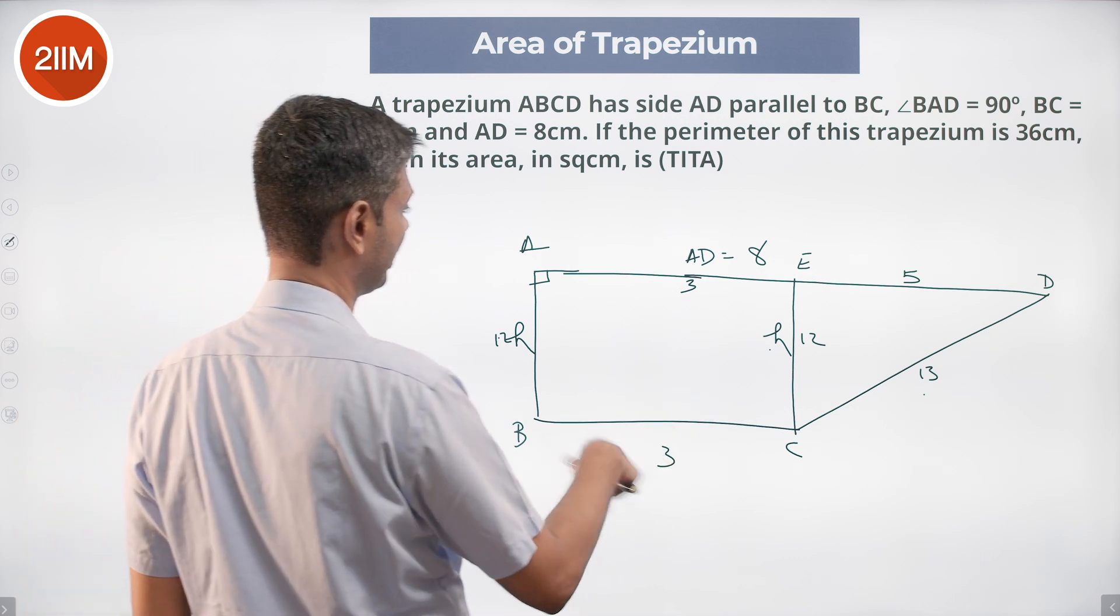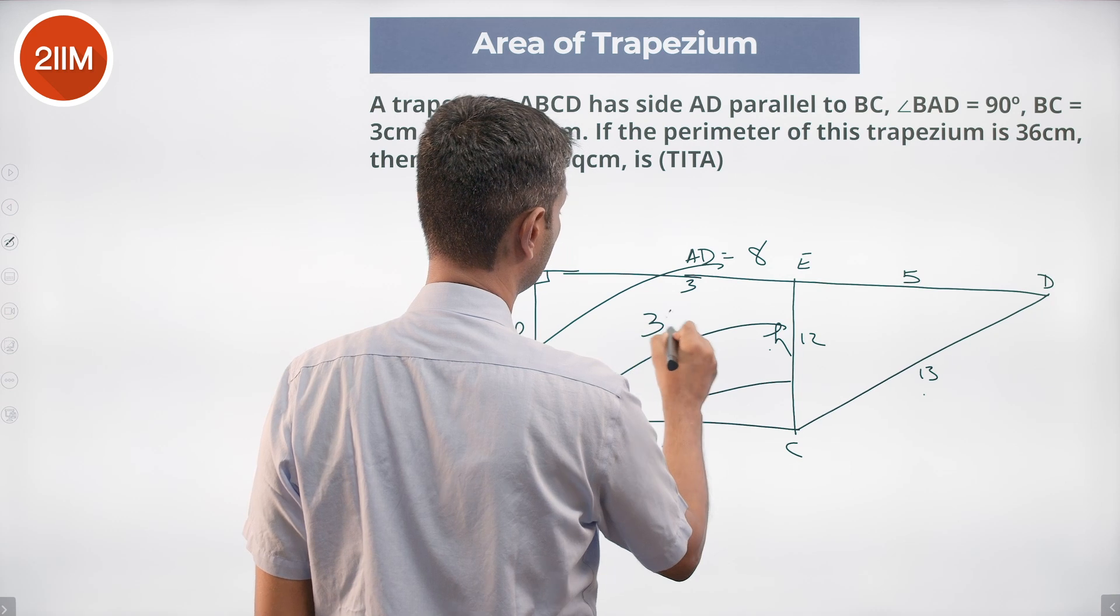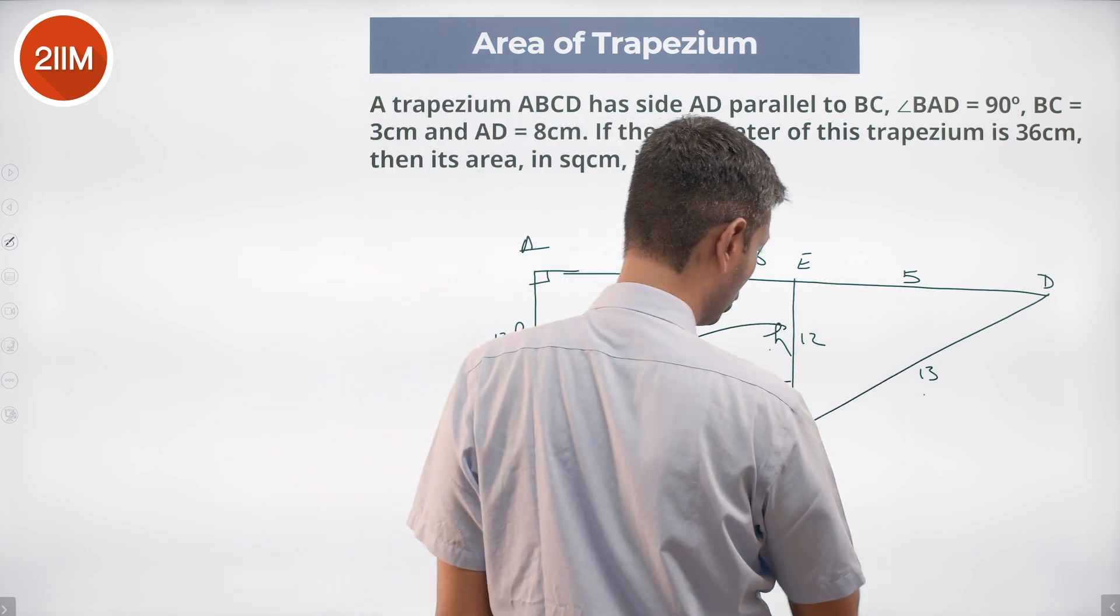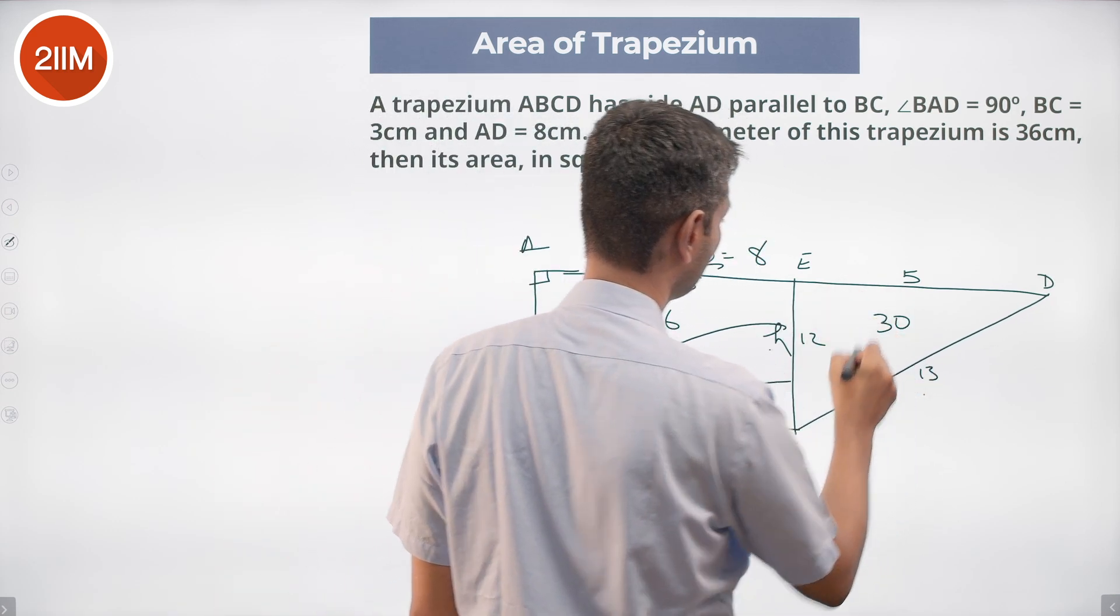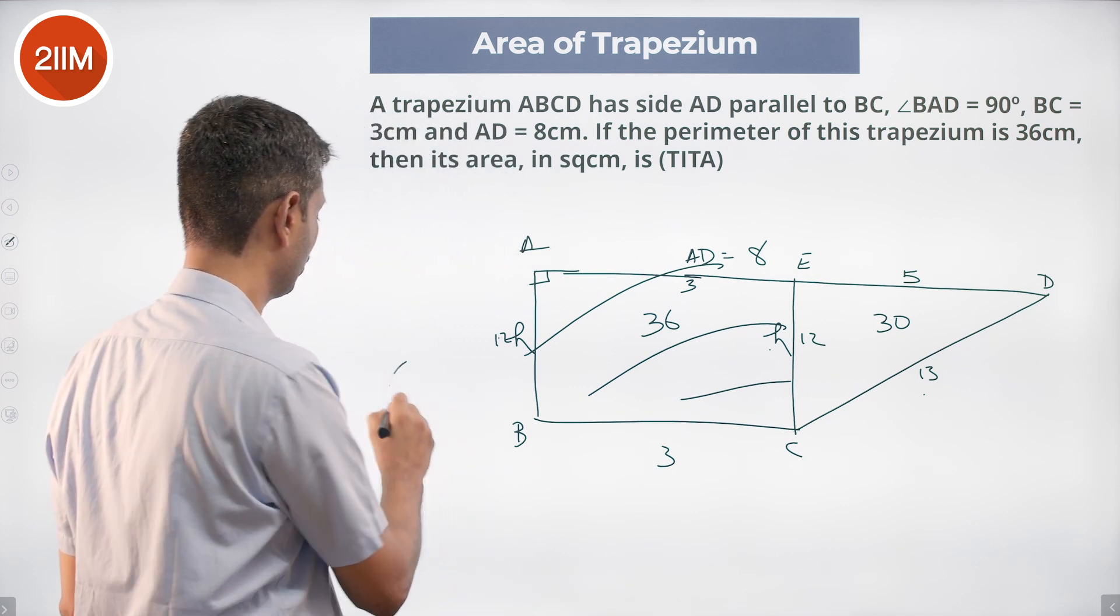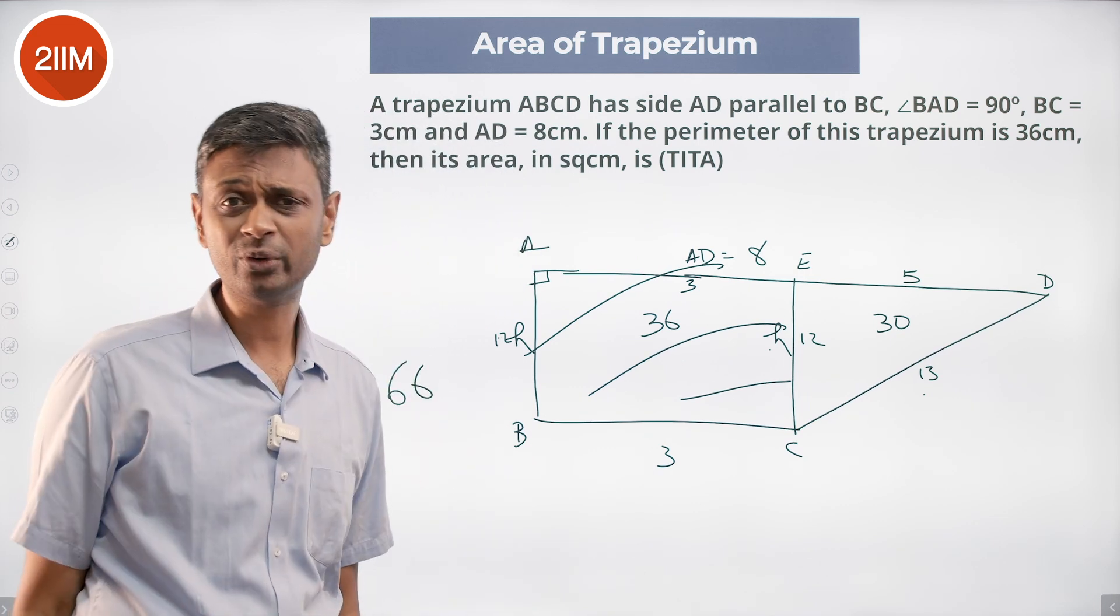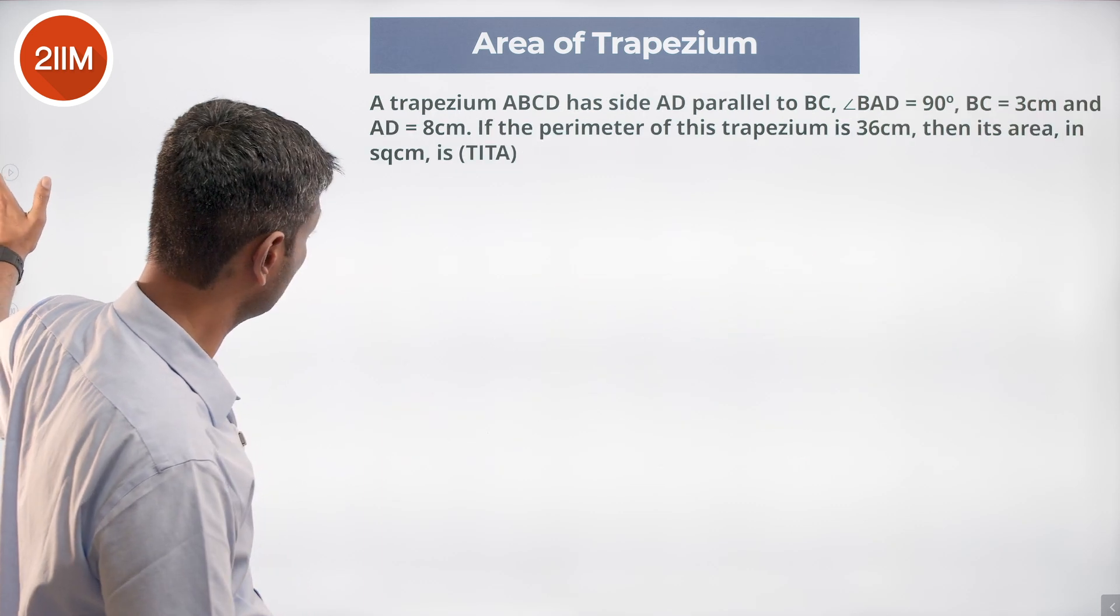Area of this rectangle is 3 into 12, that's 36. This triangle is half into 5 into 12, that's 30. 36 plus 30 is 66 square centimeters. Half into base into height, length into breadth. 66 square centimeters, we are through.